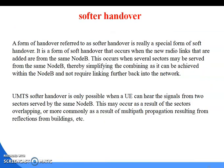The last type is softer handover. Softer handover is really a special form of soft handover. It is a form of soft handover that occurs when the new radio links that are added are from the same Node B. This occurs when several sectors may be served from the same Node B, thereby simplifying the combining as it can be achieved within the Node B and does not require linking further back into the network. Softer handover is only possible when the UE can hear the signal from two sectors served by the same Node B.